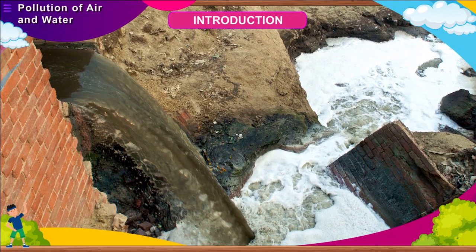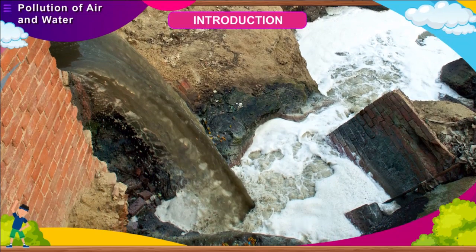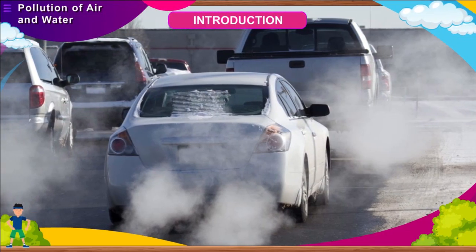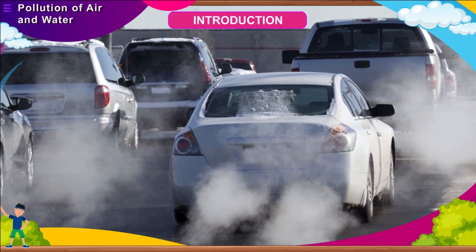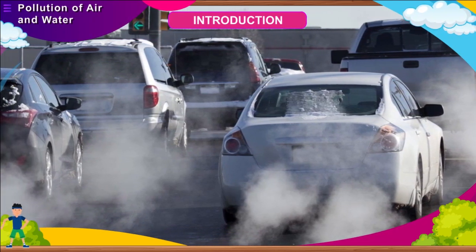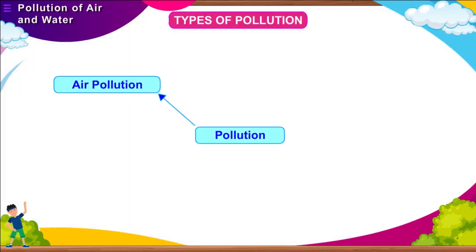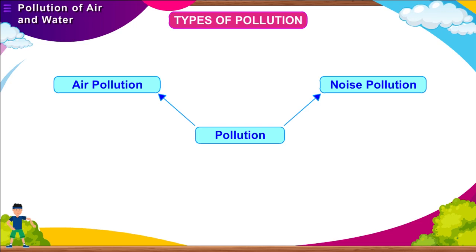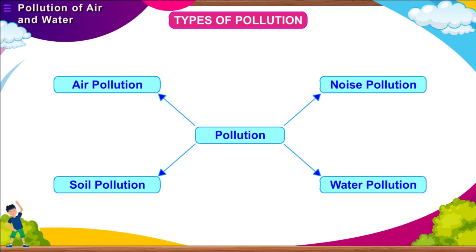Polluted sites are quite common near the cities, near rivers and open areas. Vehicles emit smoke which is visible as dark smoke in the atmosphere and can easily be felt as a choking hazard while breathing. Air pollution, noise pollution, water pollution and soil pollution are the major types of pollution that are harmful to life existing on the earth.